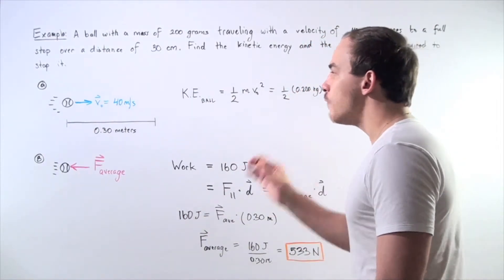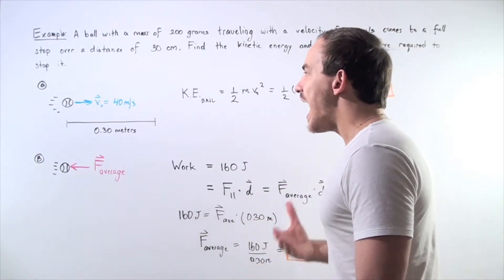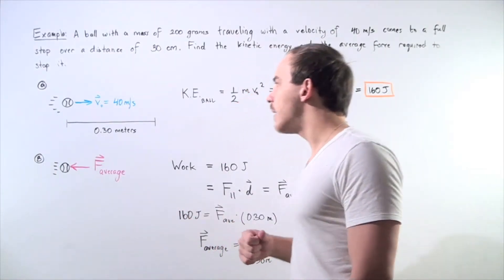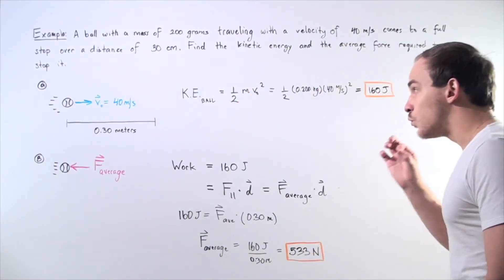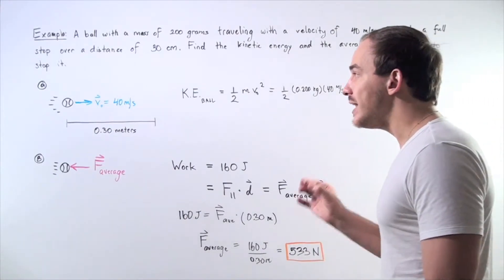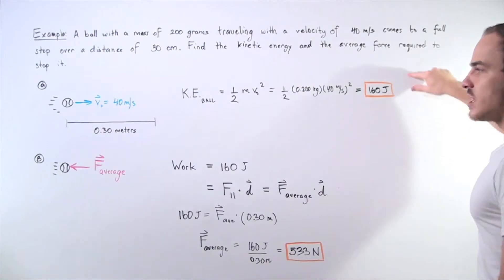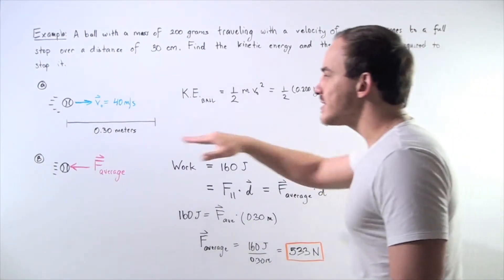Now in order to stop our object, we have to apply a force, an average force, and we have to do work on our object to stop it. The amount of work, the amount of energy we need to take away from the object is equal to this quantity.